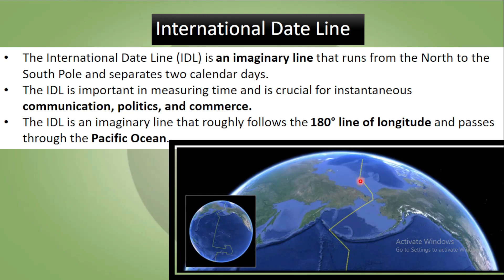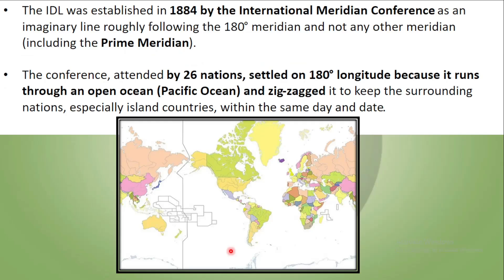This is the 180-degree line of longitude, but it is also zigzag. The reason for this is so that there is no confusion about time here, because a straight line could cut a continent twice. That is why it has been made zigzag, so that the time on the islands remains at one standard.